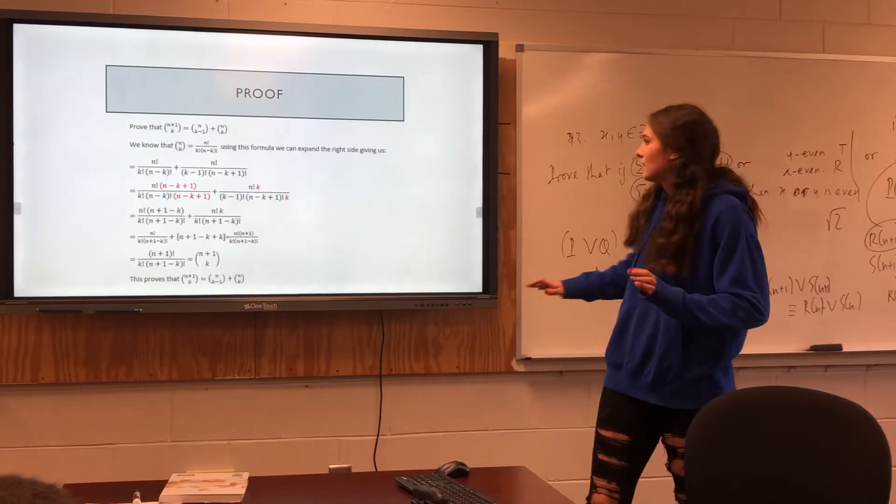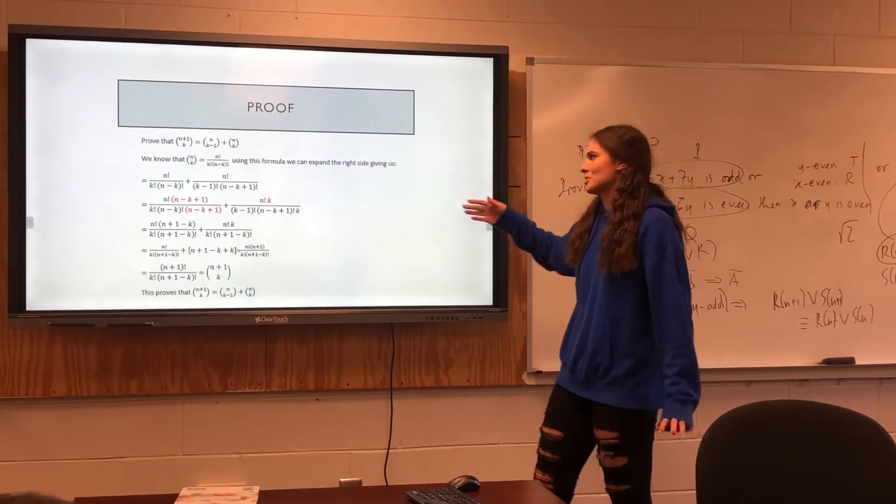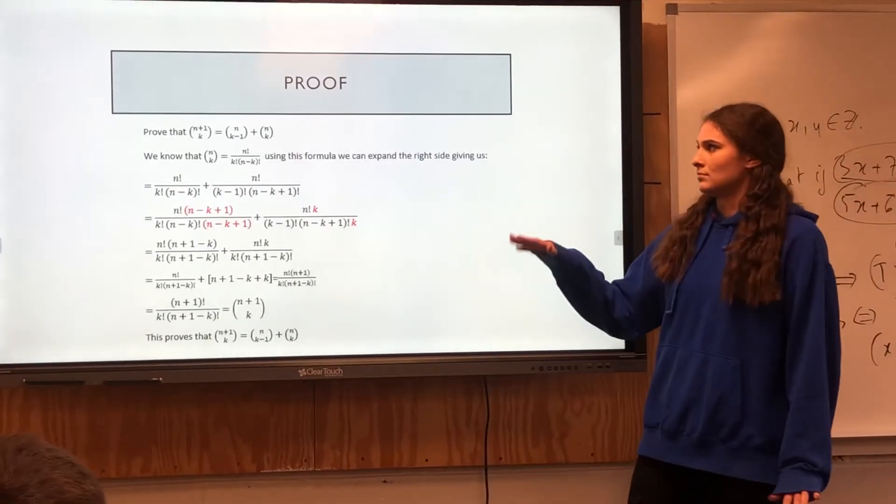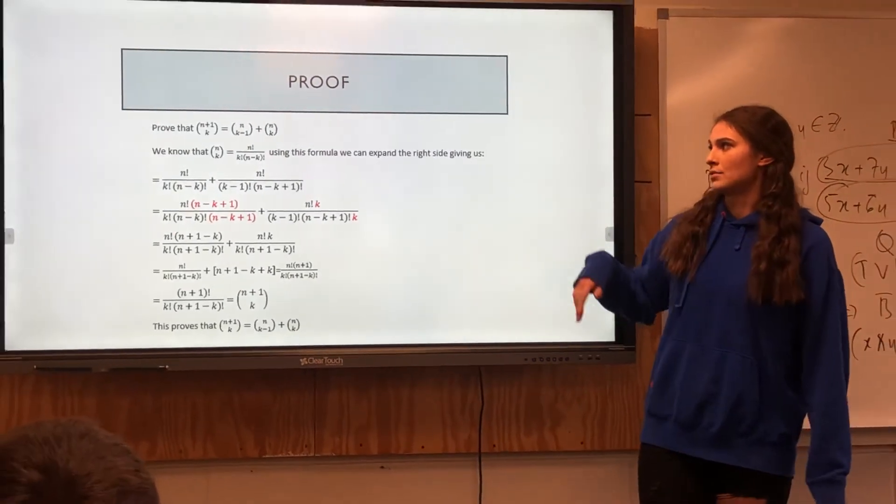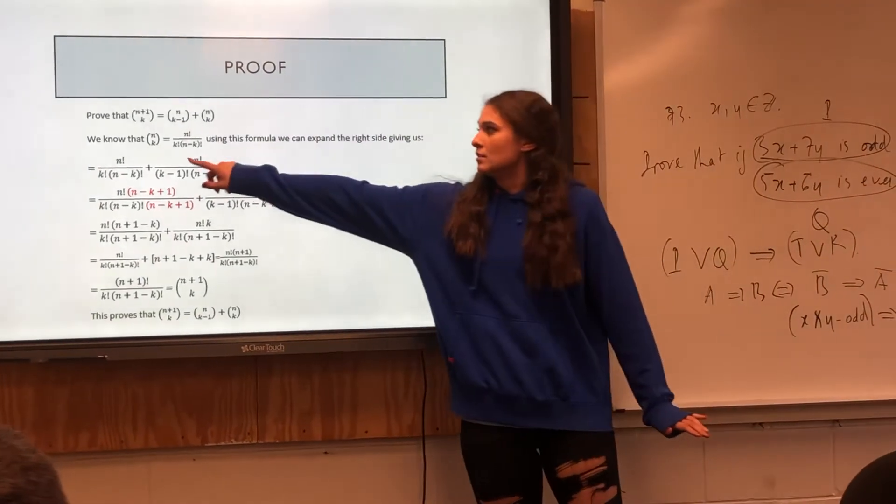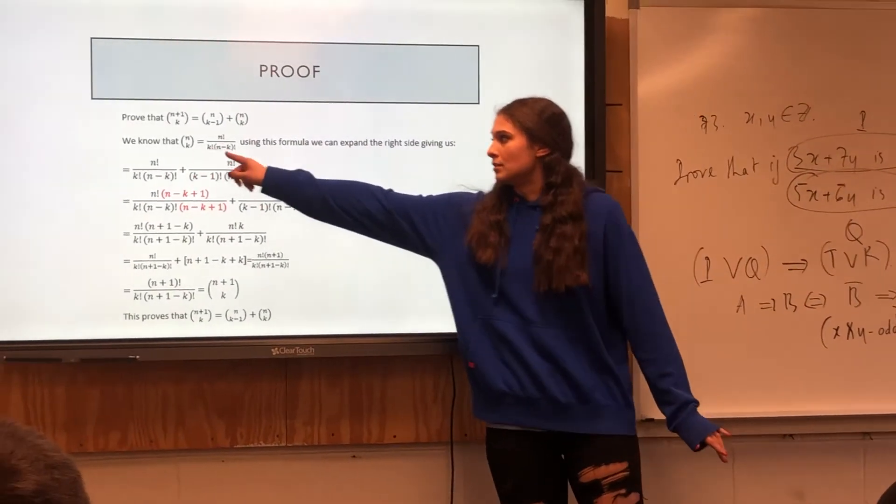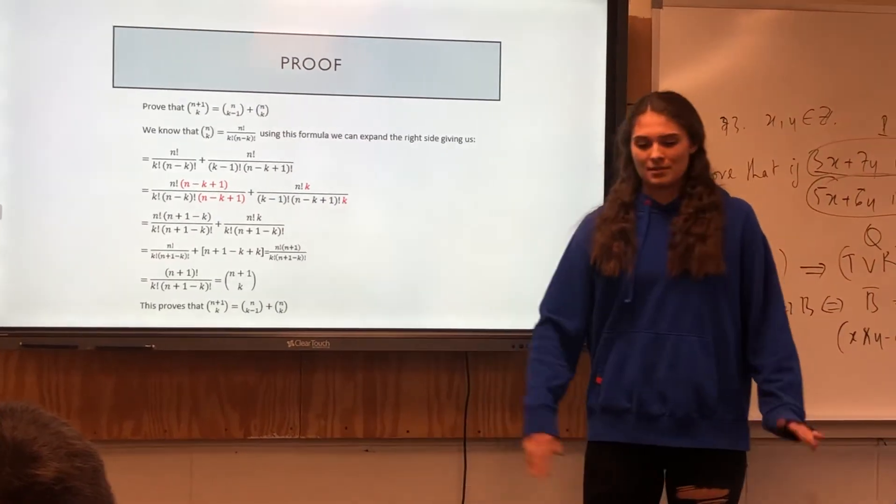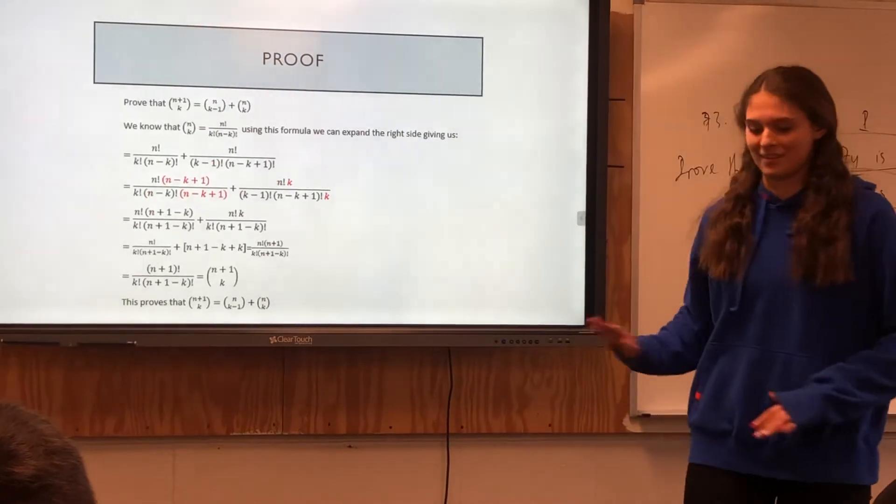And then, here's a proof. Here we're showing, proving that n plus one over k equals n over k minus one plus n over k. Basically what they did was, since we know that this equals that, they just plugged it in, found common denominator, and then proved it out. If you want to research that later, have fun with that.